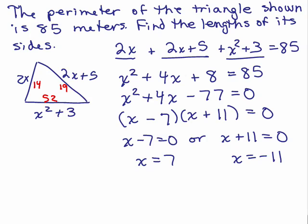So, the question is, could that be the lengths of the sides? Actually, no, because if 2 sides only add up to—I mean, 14 and 19 add up to 33, the last side is going to have to be smaller than 33. So, x equals 7 is not a solution.